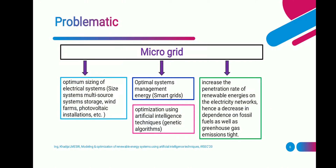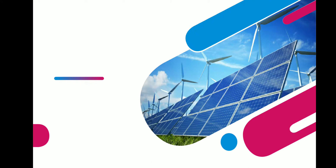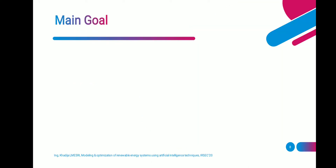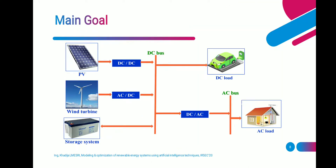The environmental component is integrated with the objective of reducing the dependence on fossil fuels as well as greenhouse gas emissions. Our main goal is to model and optimize a microgrid composed mainly of a PV system, wind turbines, storage systems, and loads.